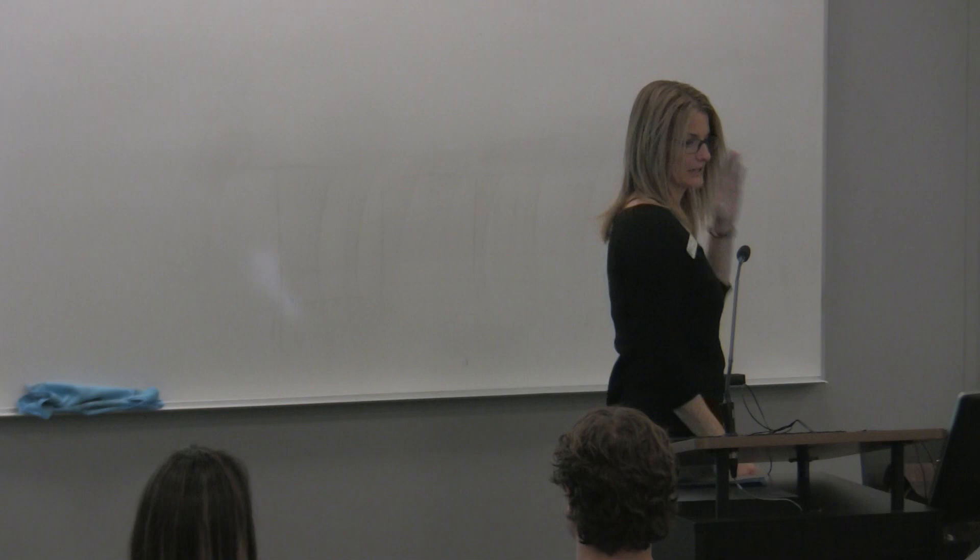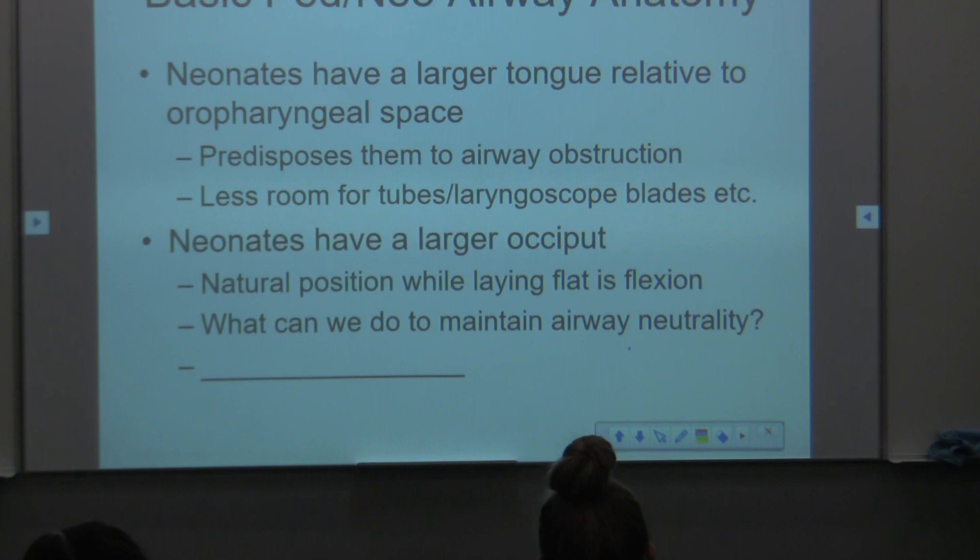The natural position because of the occiput when lying flat actually causes flexion. So what could we do to maintain airway neutrality if the occiput is big and the head flexes down? You'd put a roll — out from the neck, or position them in a sniffing position. For a neonatal or pediatric patient, you'll need to put a shoulder roll in place rather than under the head.